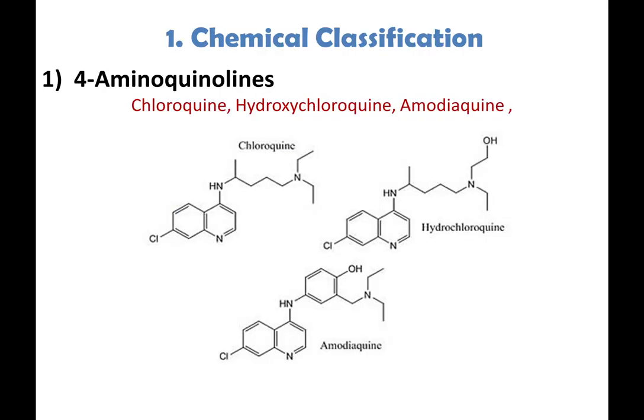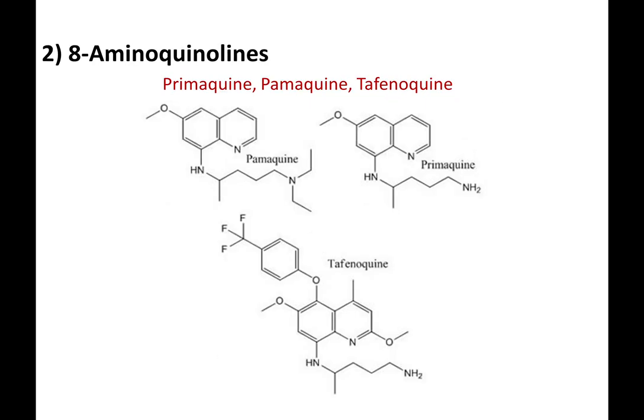The 4-aminoquinolines include chloroquine, hydroxychloroquine, and amodiaquine — you need to visualize and remember these structures, particularly chloroquine. Hydroxychloroquine has also become very famous due to its proposed action on the COVID virus. Amodiaquine is another drug of choice. These are all blood schizonticides. The 8-aminoquinolines include primaquine, pamaquine, and tafenoquine.